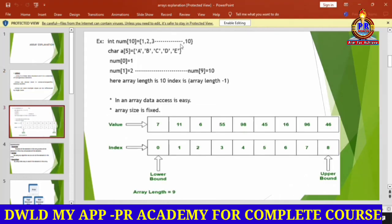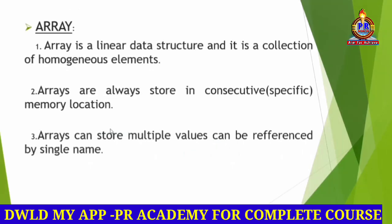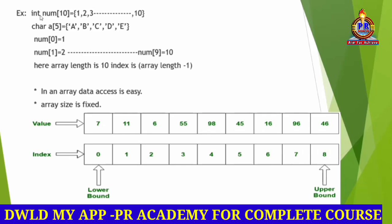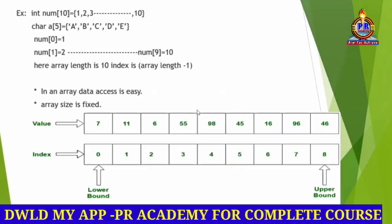Array can store multiple values. Multiple values can be referenced by a single name. Arrays always store in consecutive memory locations with homogeneous elements.